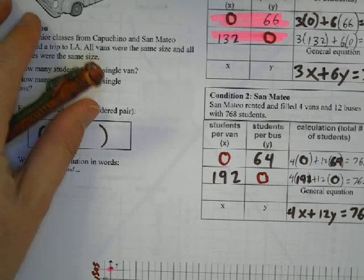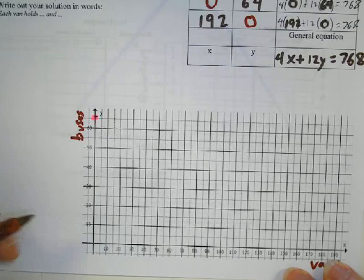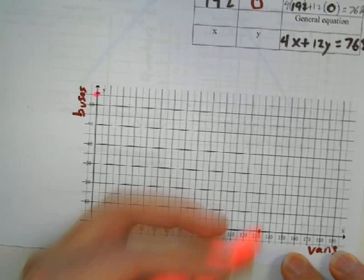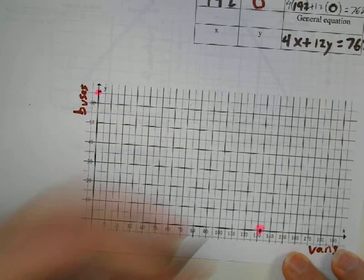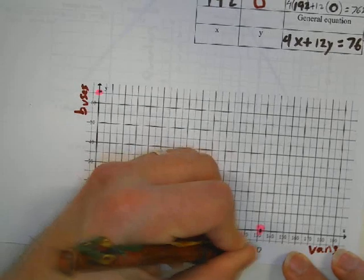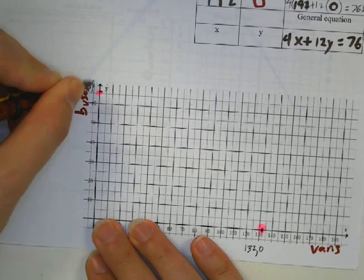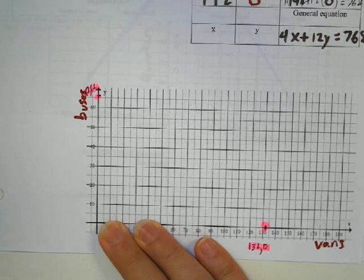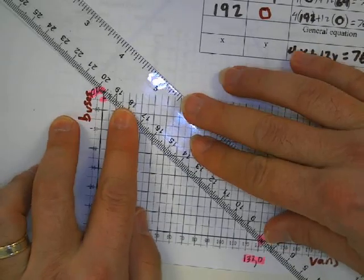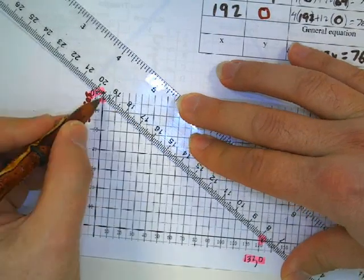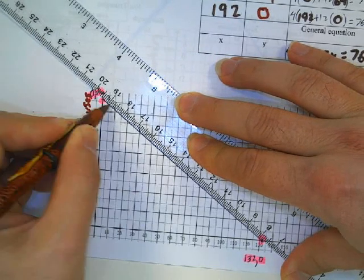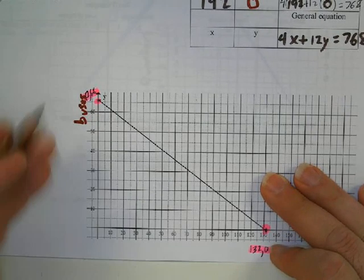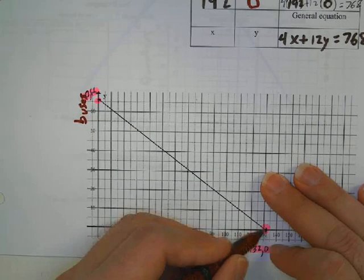Zero comma 66 is right there, and 132 comma zero. So 132 comma zero, and this one over here was zero comma 66. And then I draw a line connecting those values. Now our scale might not be perfect because I'm kind of doing this by eye.